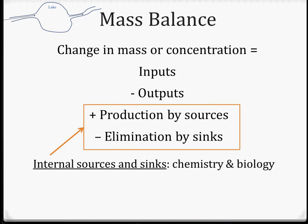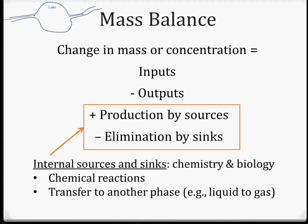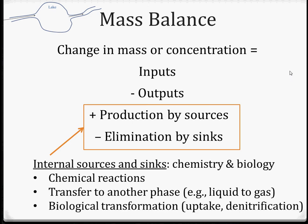Production by sources and elimination by sinks involves much more chemistry and biology. This includes things like chemical reactions — either forming new pollutants or degrading pollutants — transfer to another phase (liquid, gas, or solid), and biological transformation, such as uptake, denitrification, or degradation.